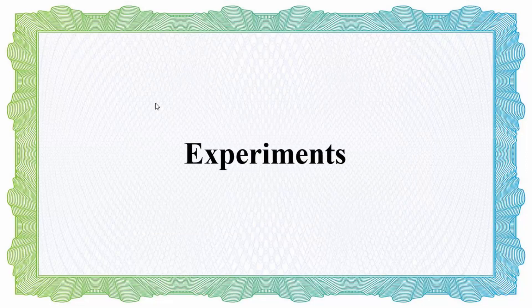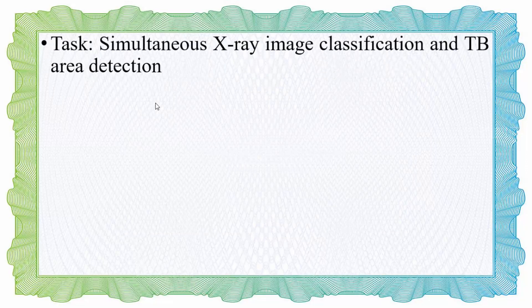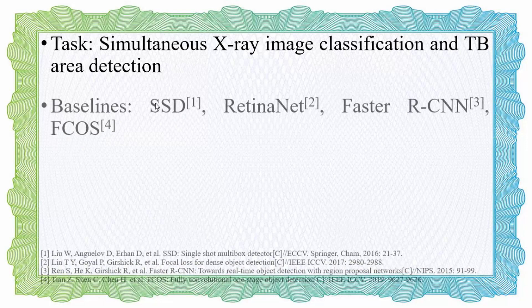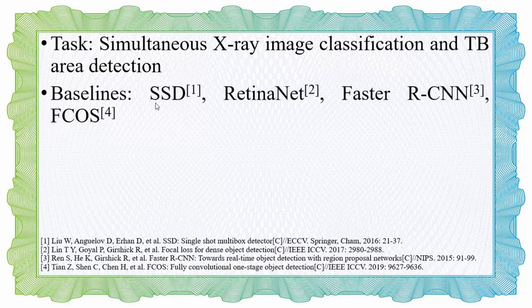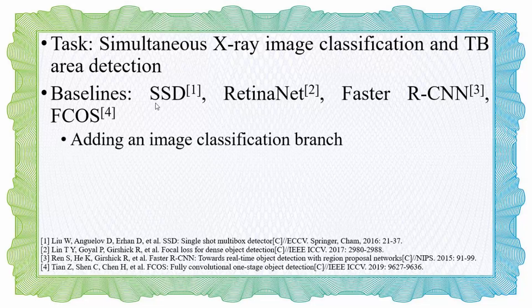We define our task as simultaneous X-ray image classification and TB area detection. We reform four well-known object detection methods to serve as baselines by adding an image classification branch after their backbone networks. A two-stage training strategy is proposed to make X-ray image classification and TB area detection share the same backbone network.